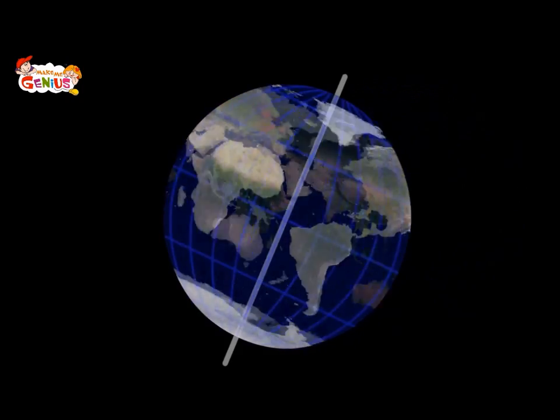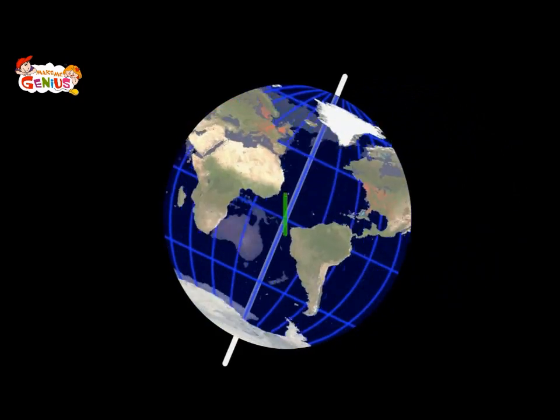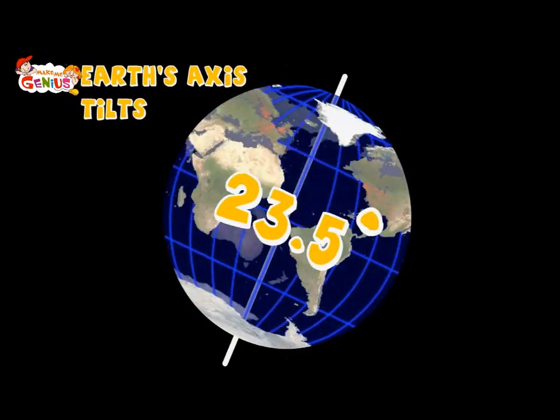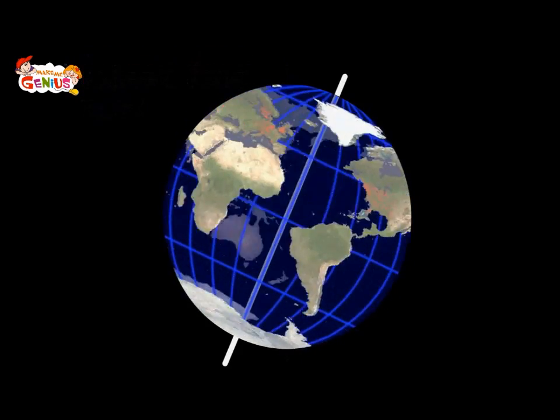The second reason is the Earth's tilt on its axis. You can see the Earth's axis is not straight, but it is tilted at about 23.5 degrees. Look here.